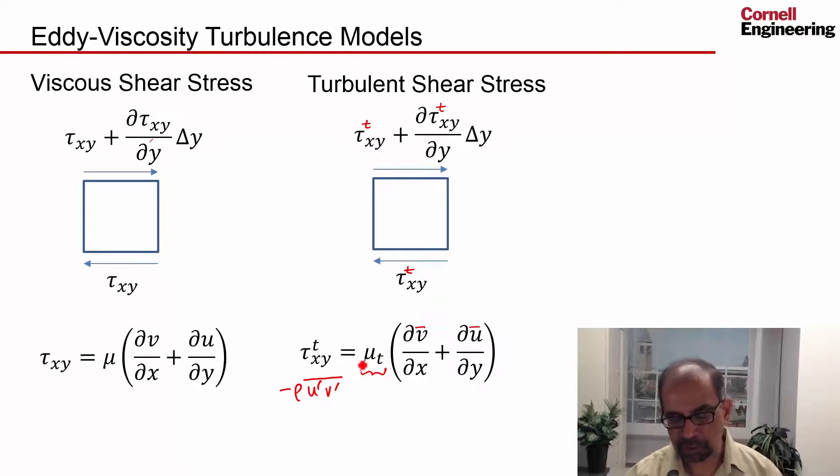The turbulence models that assume an eddy viscosity are useful, but they also have problems, especially when you have separation and so on. And this is a model, it's not a conservation law. So it's based on guesswork. We know it's incorrect, but our hope is that it will give us useful engineering approximations. So that's something to keep in mind.